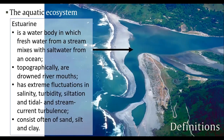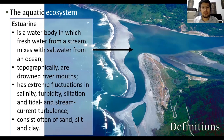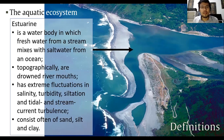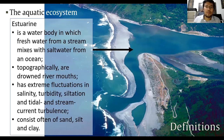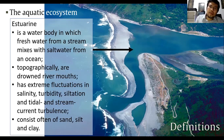An estuary is a body of water in which freshwater from a stream or streams mixes with saltwater from an ocean, and topographically are drowned river mouths. Estuaries have extreme fluctuations in salinity, turbidity, siltation, and tidal and stream current turbulence, and consist often of sand, silt, and clay. Despite these conditions, estuaries have high biological activity and productivity. The arrow in the picture points to the estuary for the given river-ocean system.